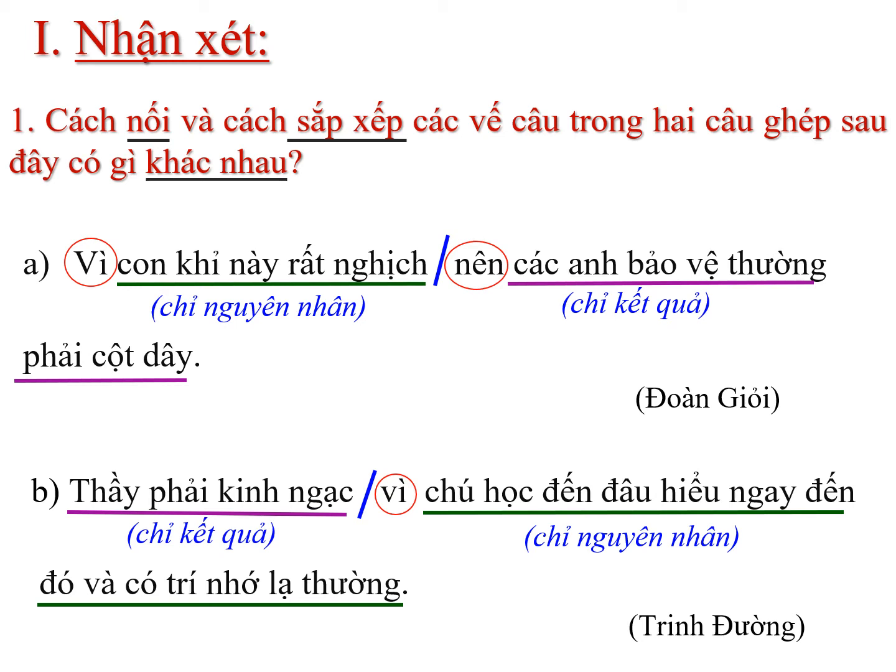Vậy là cô và mình đã phân tích xong 2 câu A và câu B rồi. Các em cùng quan sát vào câu A và câu B và cho cô biết: quan hệ giữa 2 vế câu của 2 câu ghép trên đều là quan hệ nguyên nhân kết quả, nhưng cấu tạo của chúng có điểm khác nhau. Câu A ta sử dụng 1 cặp quan hệ từ vì...nên, còn câu B ta sử dụng 1 quan hệ từ vì. Dù câu ghép có sử dụng 1 cặp quan hệ từ vì...nên hay 1 quan hệ từ vì, thì đó đều là câu ghép chỉ quan hệ nguyên nhân kết quả. Các em đã rõ chưa?